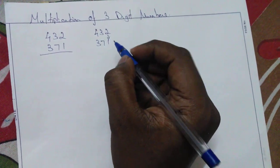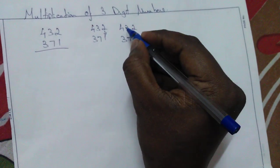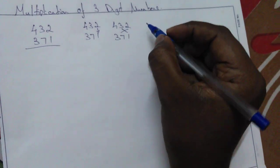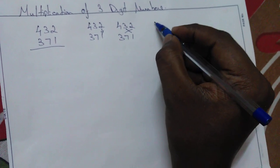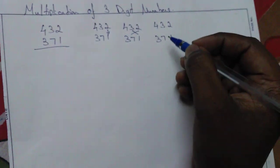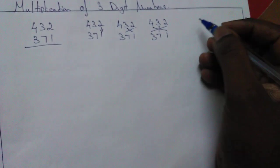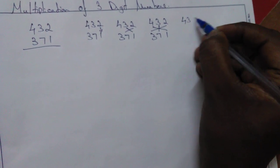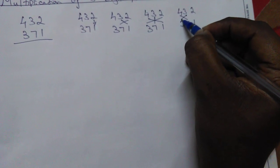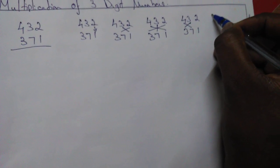First we want to multiply the ones. Next we want to multiply the ones and tens. This is the rule to multiply three-digit numbers. In the third step we need to multiply all. In the fourth step we need to multiply both. Last method, we multiply these.